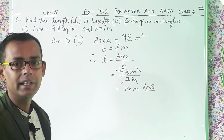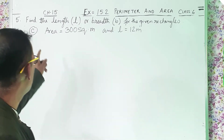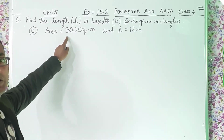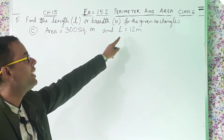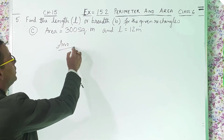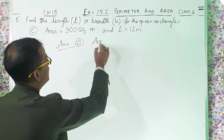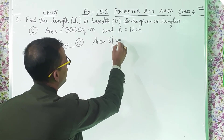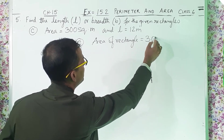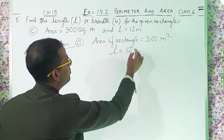Now we will move on to question 5C. Area equals 300 square meters and L equals 12 meters. Area of rectangle equals 300 meter square and L is 12 meters.